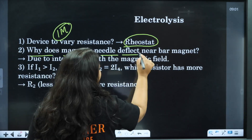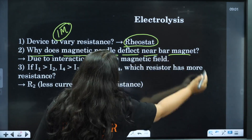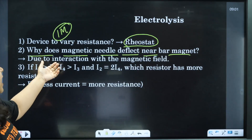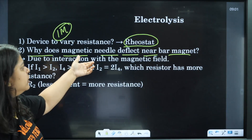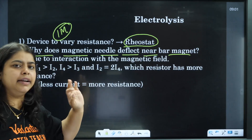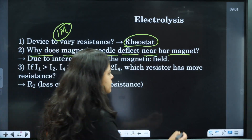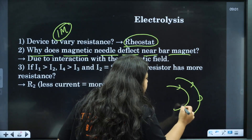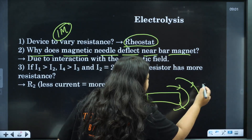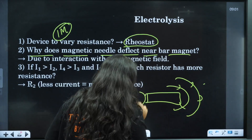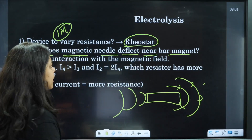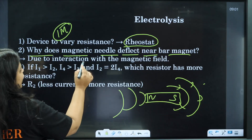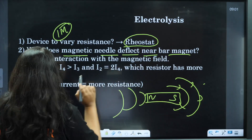Why does a magnetic needle deflect near a bar magnet? Due to the interaction with the magnetic field of the bar magnet, the needle deflects.